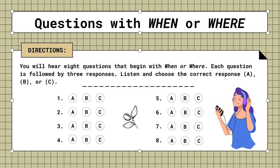Mini-test. Questions with when or where. You will hear eight questions that begin with when or where. Each question is followed by three responses. Listen and choose the correct response. A, B, or C.